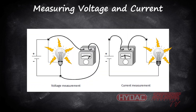Now let's talk about measuring voltage and current. To measure voltage on an electric circuit, you don't have to insert the meter into the circuit. Instead, all you have to do is touch the leads of the multimeter to two points on the circuit, and the multimeter will display the voltage that exists between those two points. To measure current, you must connect the two leads of the multimeter into the circuit so that the current flows through the multimeter. In other words, the multimeter must become a part of the circuit itself.